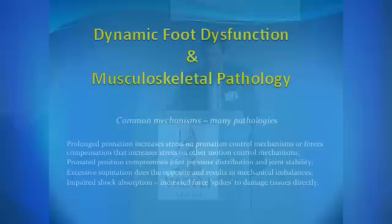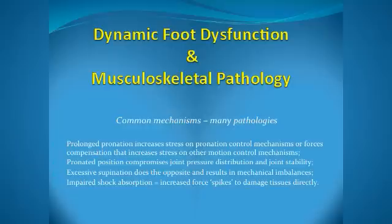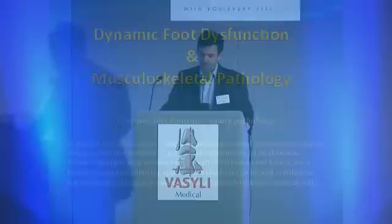Prolonged pronation increases stress from pronation control mechanisms or forces — for example, the tibialis posterior tendon, if it's contracting eccentrically to decelerate pronation and we have excess pronation, then that tendon will be overloaded. There's a mechanism by which it can become damaged by abnormal pronation. The compensation that occurs can increase stress on other motion control mechanisms as well.